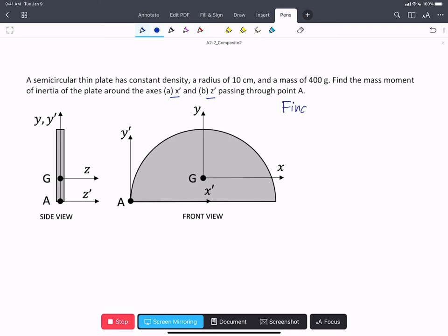about point A around the axis x prime and z prime. So that is, we're going to find i_x'x' through A